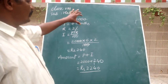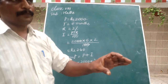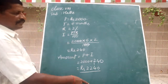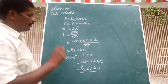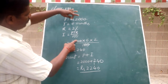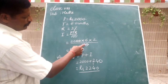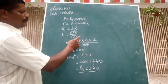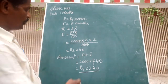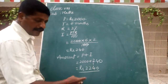One more question. P equals 2,500 rupees, T equals one year which means 12 months, R equals 1%. So I equals PTR by 100: 2,500 into 12 into 1 divided by 100. Cancelling two zeros, we get 25 into 12 equals 300 rupees. Therefore A equals P plus I: 2,500 plus 300 equals 2,800 rupees.